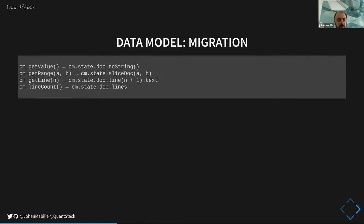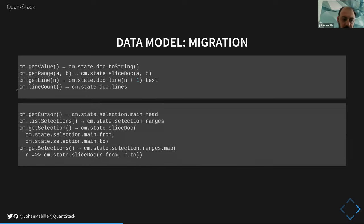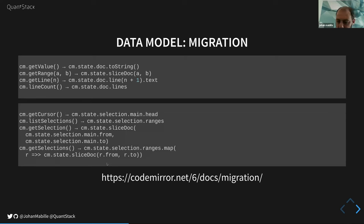Here's a quick overview of migration from the old methods in CodeMirror 5 to the new ones in CodeMirror 6. I'm not going to list all of them, just to give an overview. If you want an exhaustive list you can go to this part of the documentation — it's convenient for finding how to do things. That's it for the data model.